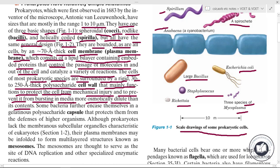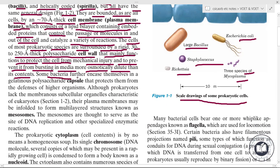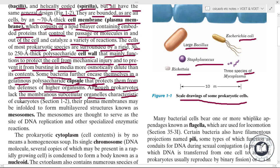Some bacteria further encase themselves in a gelatinous polysaccharide capsule that protects them from the defenses of higher organisms — defending against organisms present outside the cell. All prokaryotes lack the membranous subcellular organelles characteristic of eukaryotes.